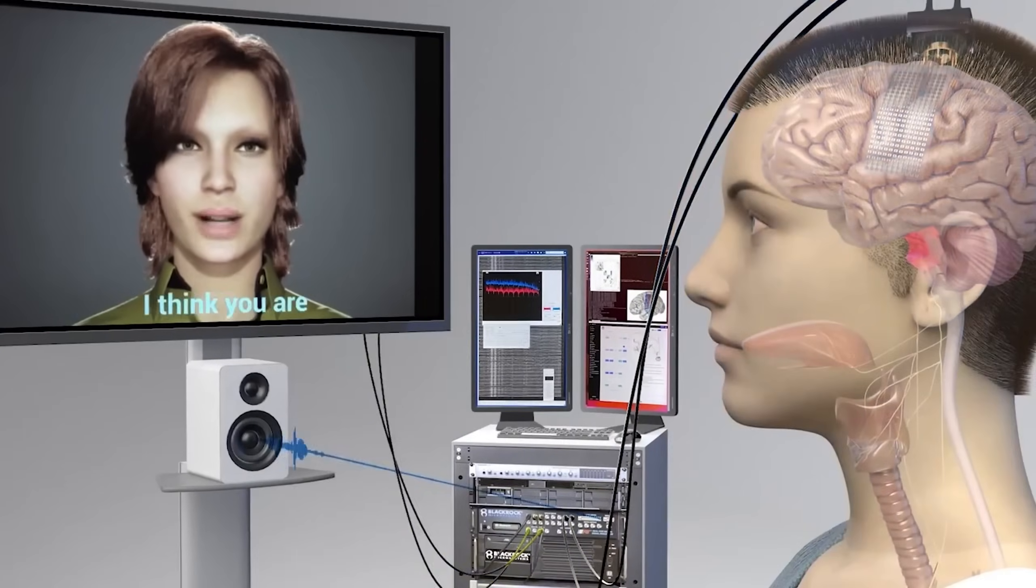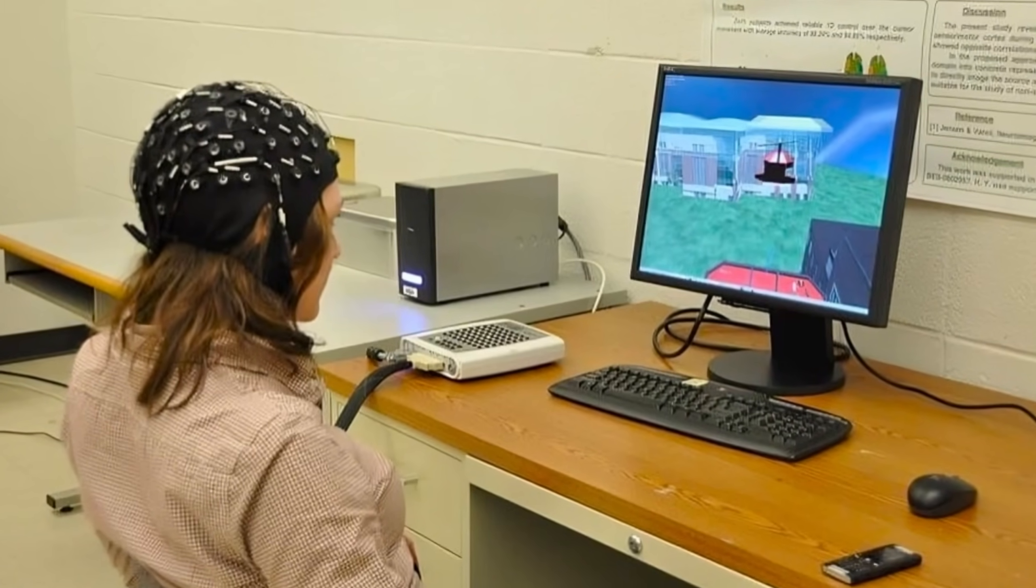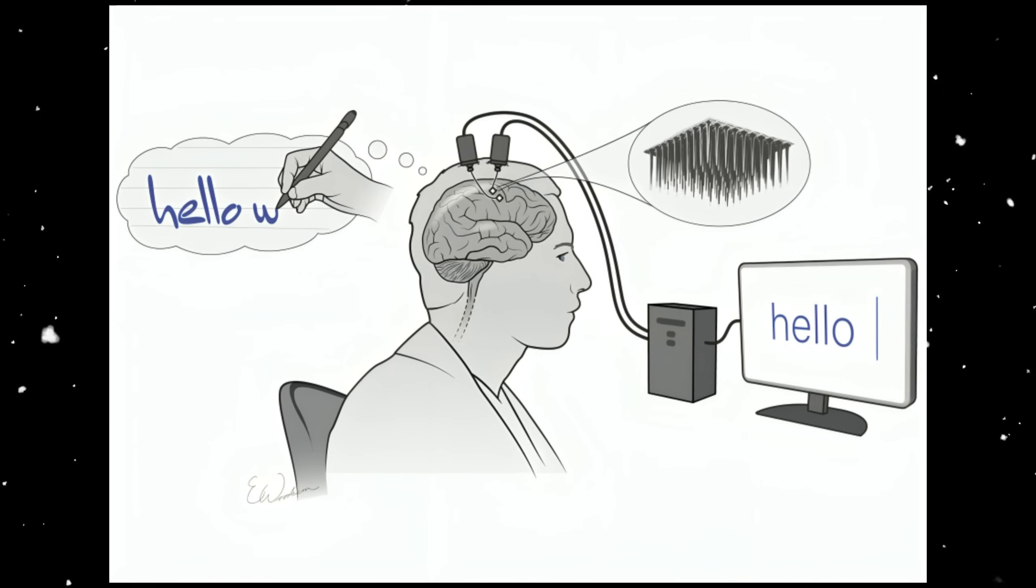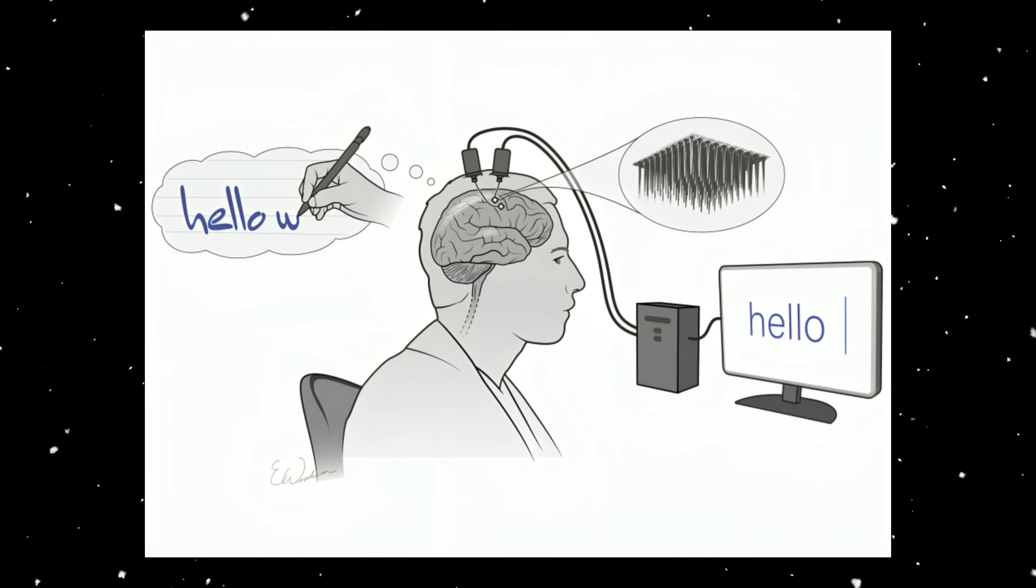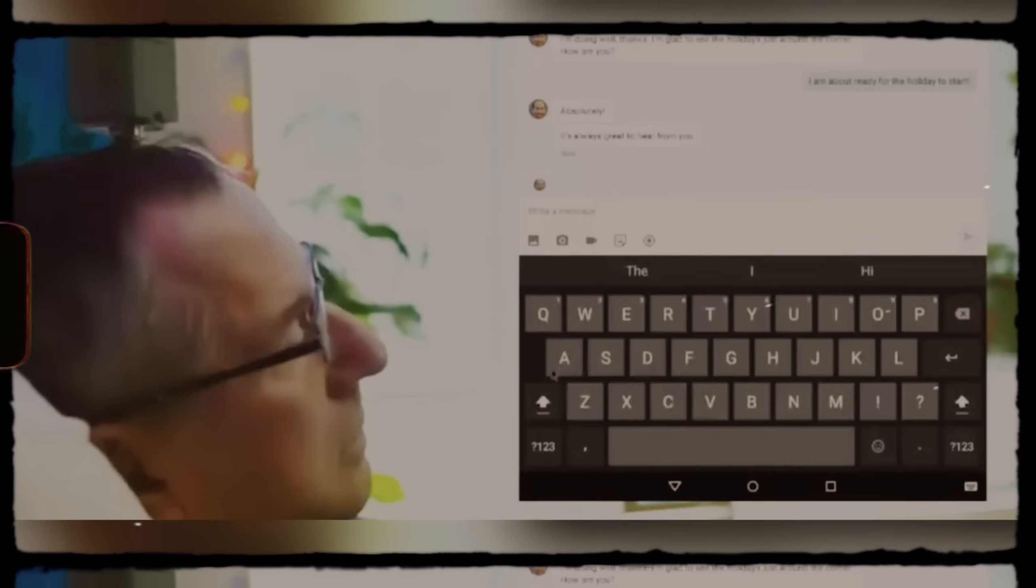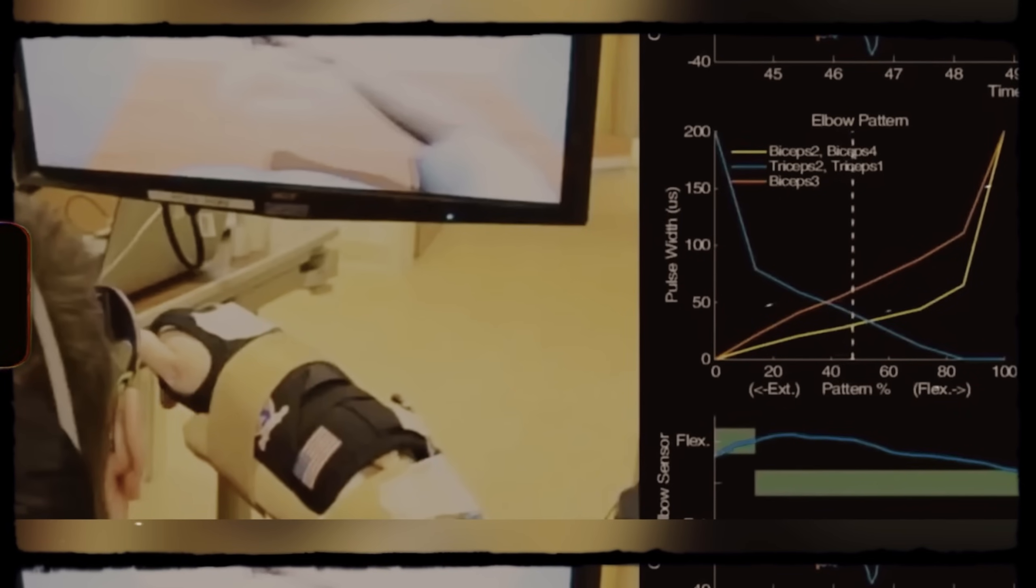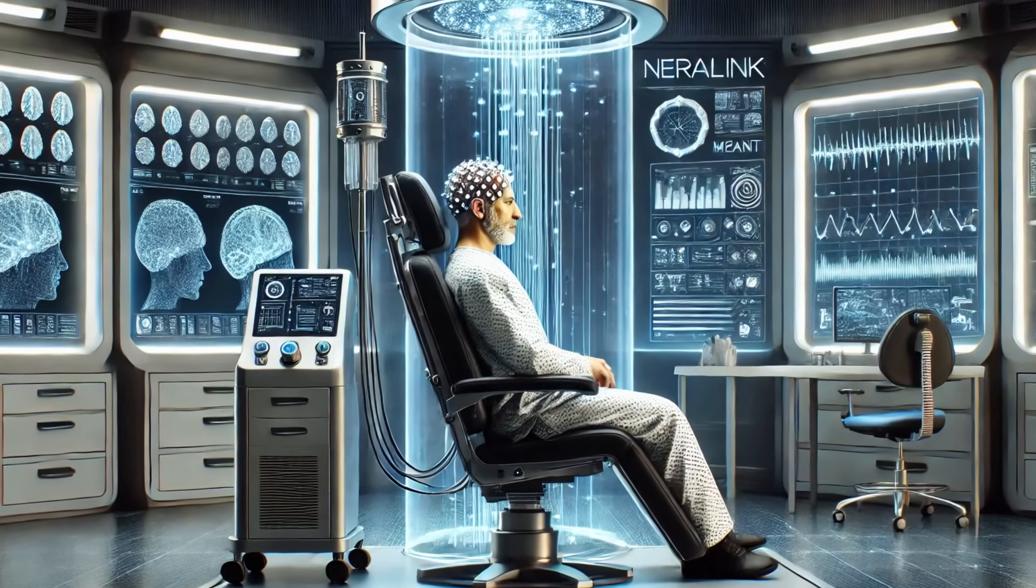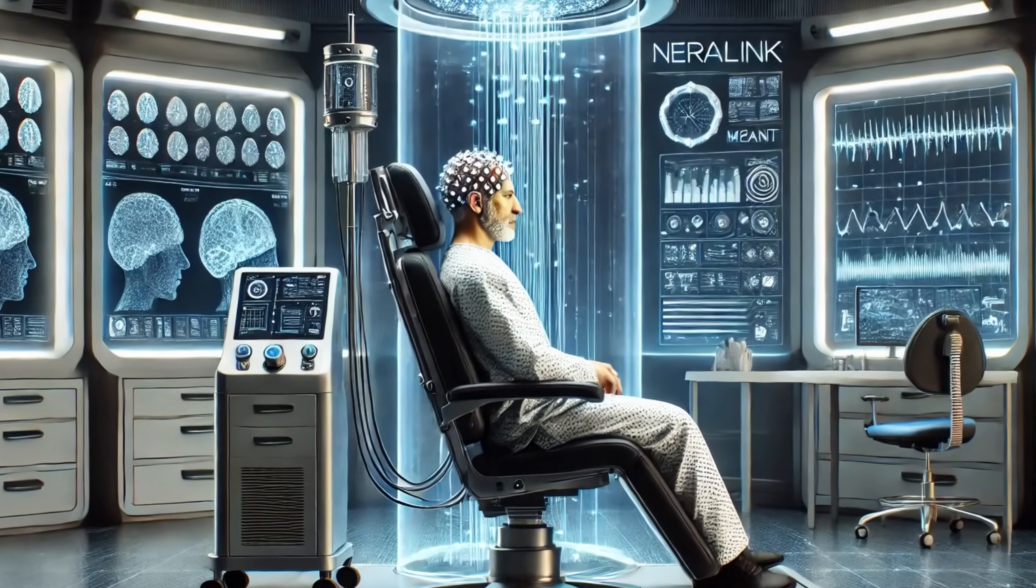Before Arbaugh got his chip, he used a stick in his mouth to use a tablet. Now, he can just think about what he wants to do on the screen, and the chip does it. He said the chip makes him more independent and less dependent on others. The second patient is expected to do even better than the first, because Neuralink has learned a lot from past mistakes.